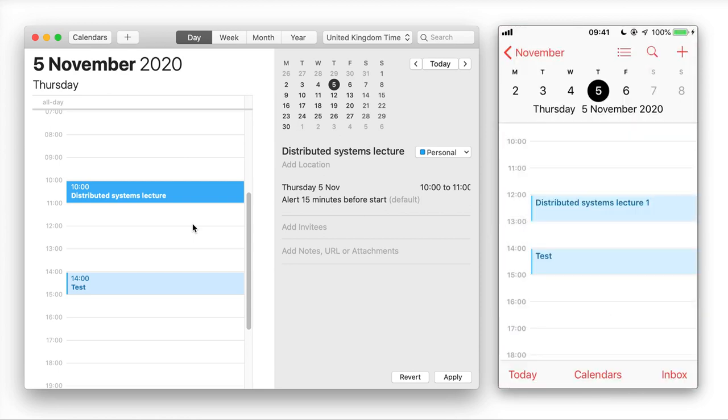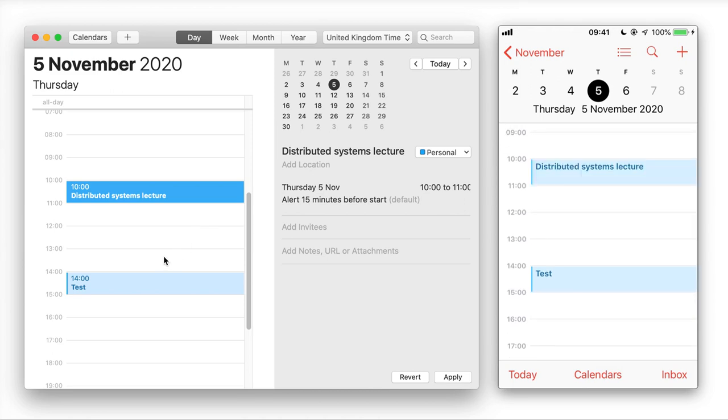After airplane mode is off, the two devices should be able to sync up with each other again. The changes from one should propagate over to the other. You can see what has happened now is the time of this event has moved to 10 a.m. on both devices. But my change changing the title to lecture one has somehow disappeared.